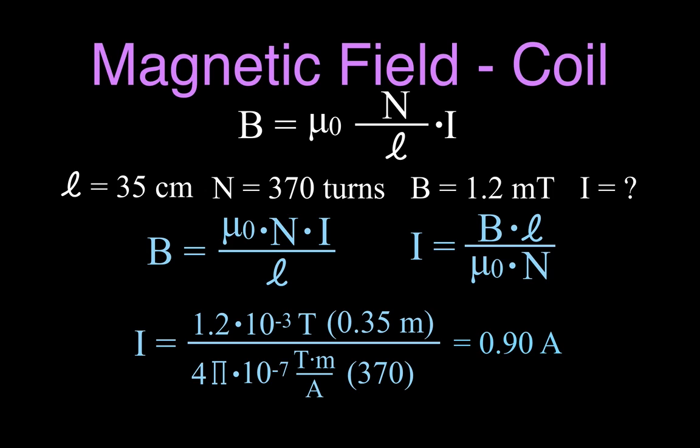So there you go. I think I did four examples. We solved for the magnetic field strength with and without the core. We solved for the length. We solved for the current. You could do the same thing basically for solving for the number of windings.